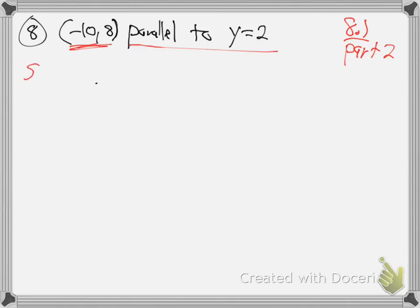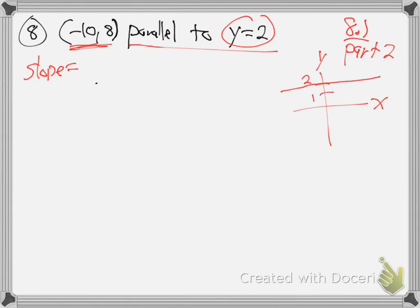So we need the slope — we always need the slope. Let me graph what they're saying. y equals 2: this is the x-axis, the y-axis, go up to 2. That means there's a line going through y equals 2. That's what this is.